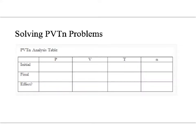The next set of notes is going to go through how to do some actual math calculations involving PVTN problems. You have to know those relationships shown in the graphs in order to be successful on these problems. The first thing you will be setting up is what's known as a PVTN analysis table, which helps you gather all the information given in the problem and figure out how to solve for the unknown variable. Let's look at some examples.